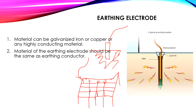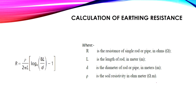The material of the earthing electrode should be the same as the earthing conductor — meaning the conductor, the earthing electrode, and the conductors in the grid should all have the same material. This is to prevent corrosion caused by connecting different materials, which produces a potential difference between them. For example, galvanized iron and copper have different potentials, which causes corrosion of one of the conductors or the earthing electrode.